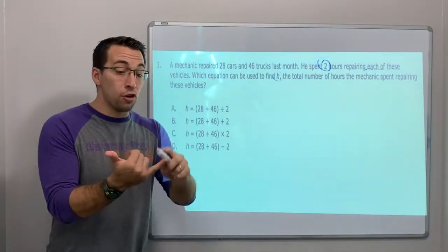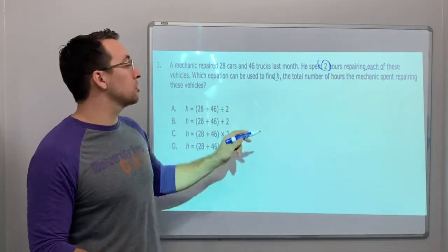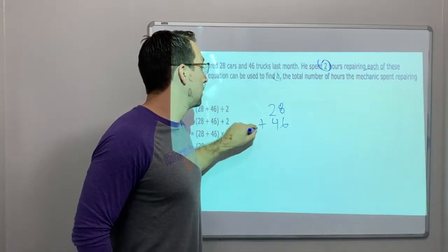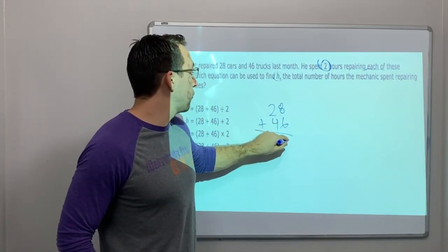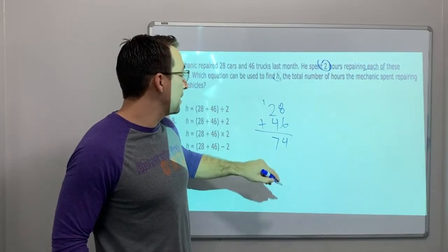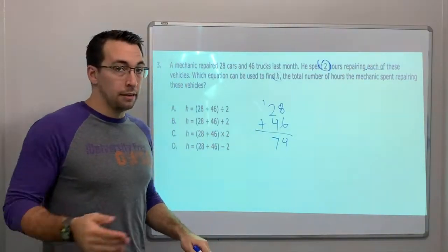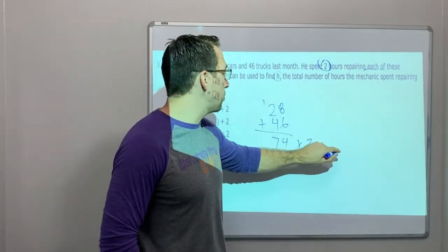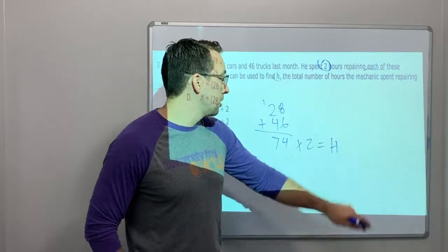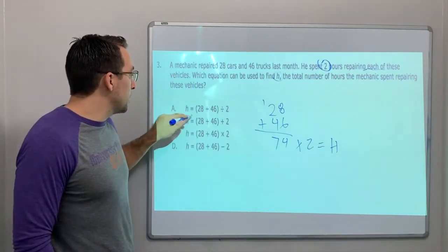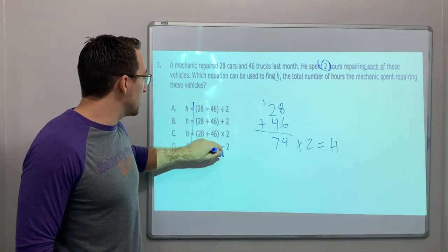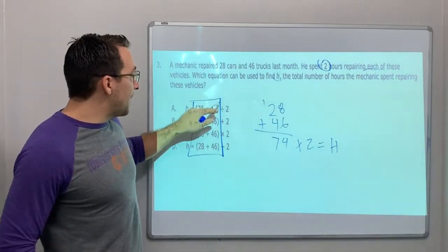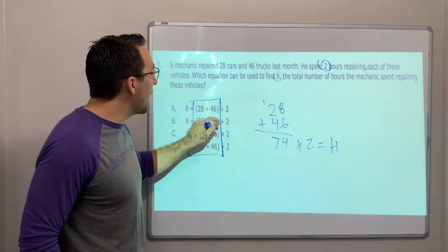So it's the same for cars and trucks. How many vehicles total? Let's add 28 plus 46. 8 and 6 is 14 plus 1, 74. And then 74 times 2 hours equals H. 28 plus 46, this is all the same. So that's good. Are we going to divide by 2? No, we're not dividing by 2. We're multiplying by 2.